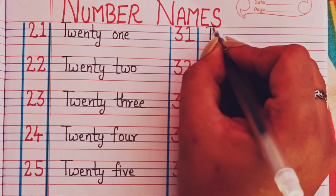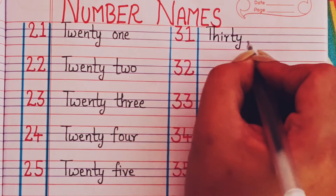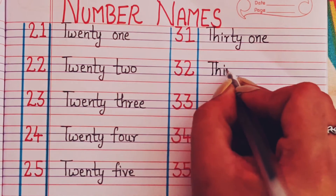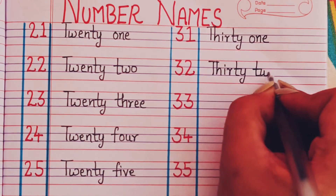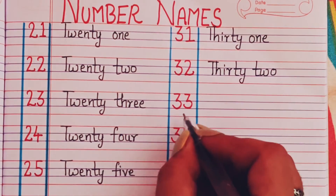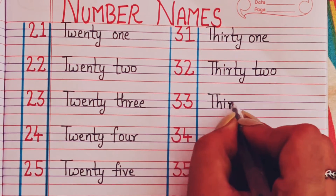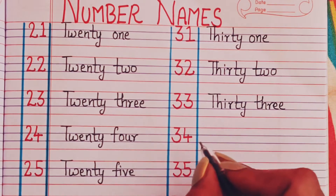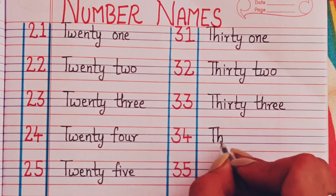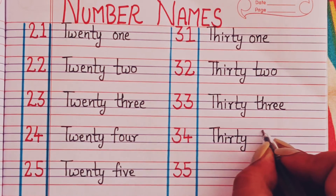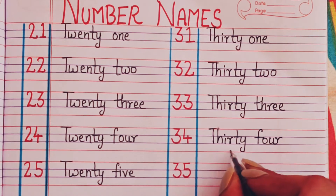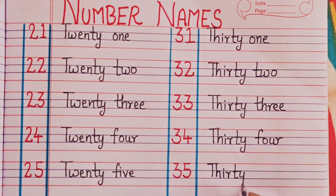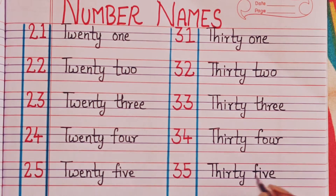31 - T-H-I-R-T-Y O-N-E, 32 - T-H-I-R-T-Y T-W-O, 33 - T-H-I-R-T-Y T-H-R-E-E, 34 - T-H-I-R-T-Y F-O-U-R, 35 - T-H-I-R-T-Y F-I-V-E.